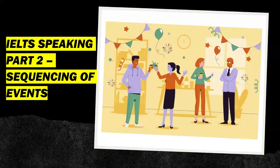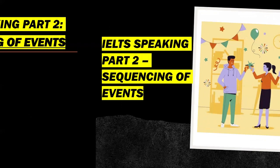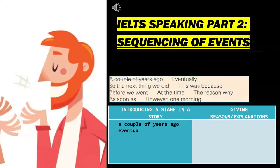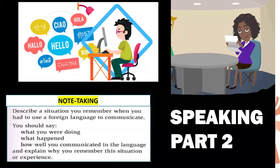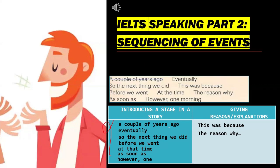In IELTS Speaking Part 2, there are also questions that ask you to describe the sequence of events. To do that, the main vocabulary we use introduces stages in a story and gives reasons and explanations. For example: 'a couple of years ago,' 'eventually,' 'the next thing you did,' 'before,' 'at that time,' 'as soon as,' 'however,' and so on. We can also give reasons using phrases like 'this was because' and 'the reason why.' Let's listen to an example answer.